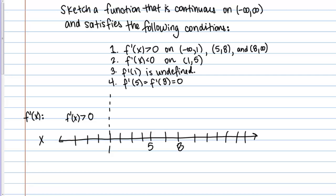From 5 to 8, F prime of X is also greater than 0. Then also from 8 to infinity, F prime of X is greater than 0. For the second criteria, F prime of X is less than 0 on 1 to 5 — so on that interval, F prime of X is less than 0.